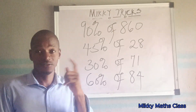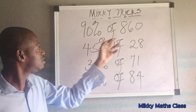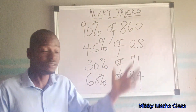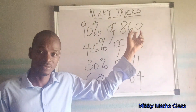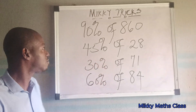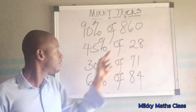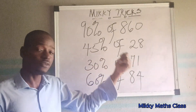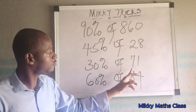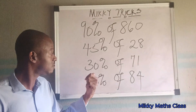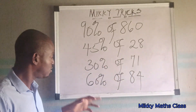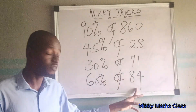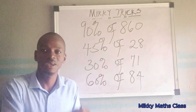Here are some practice problems. 90% of 860: find 100% which is 860, find 10% which is 86, then subtract. 45% of 28: find 50% of 28, find 5% of it, then subtract. 30% of 71: find 10% of the number and multiply by 3. 60% of 84: find 50%, find 10%, then add them together.